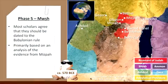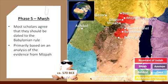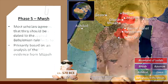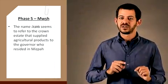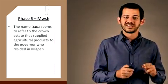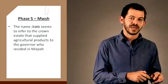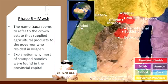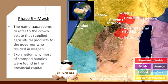The date and significance of these stamped impressions have been accorded lengthy discussion in scholarship. Most scholars agree that they should be dated to the Babylonian rule in the 6th century BCE, primarily based on analysis of the evidence from Mizpah. Thus the name Moza seems to refer to the crown estate that supplied agricultural products to the governor who resided in Mizpah. And by that one can explain why most of the stamped handles were found in the provincial capital.